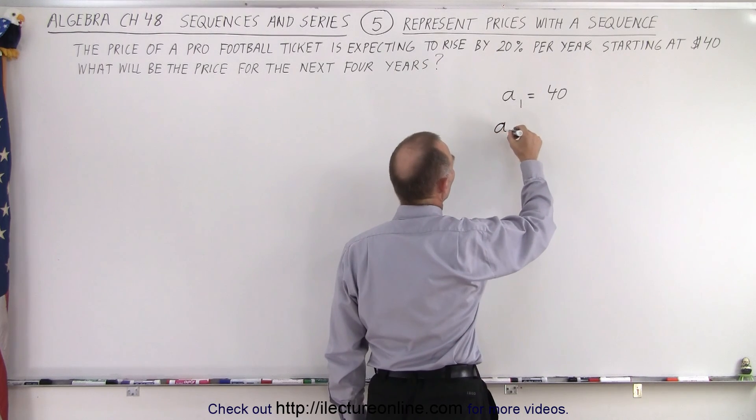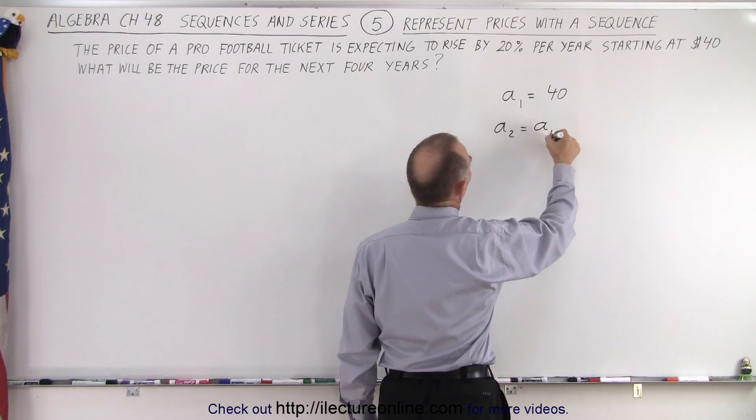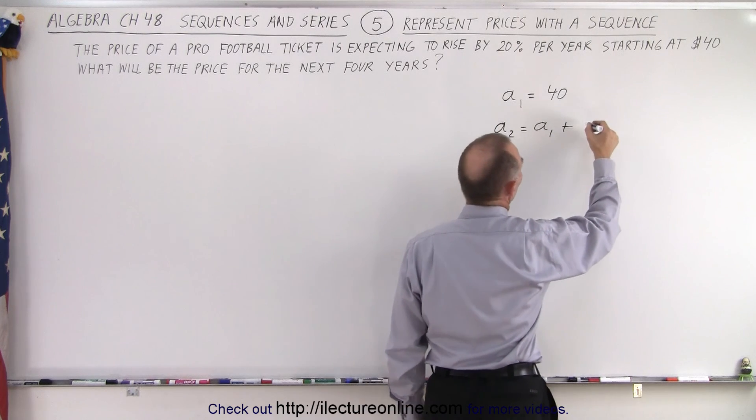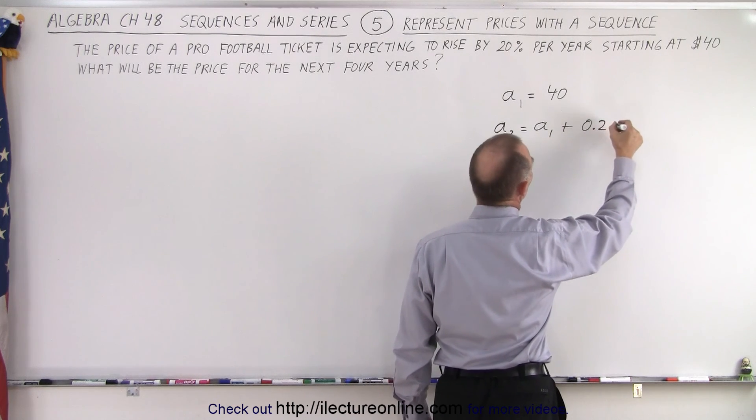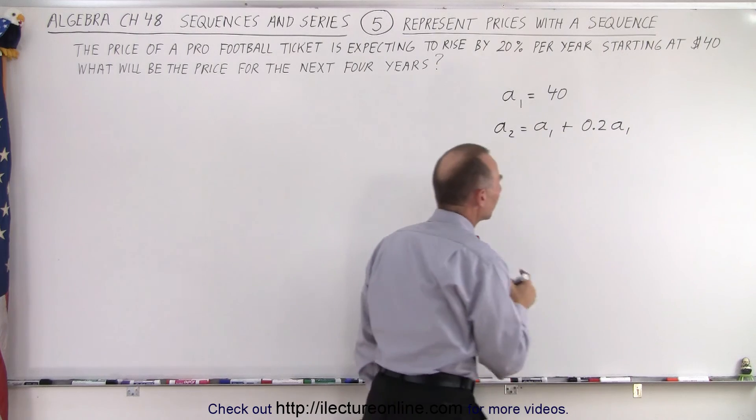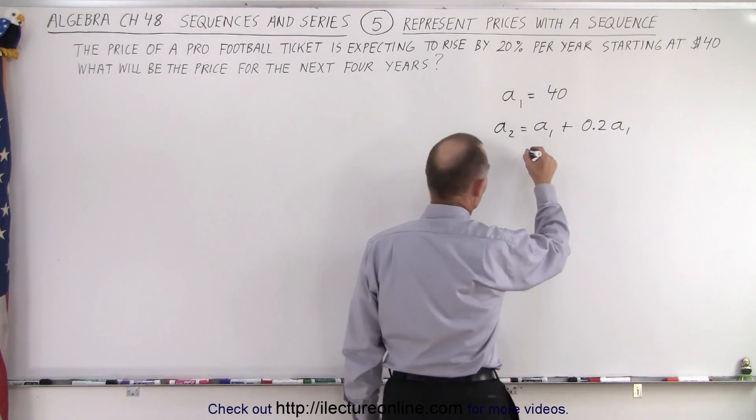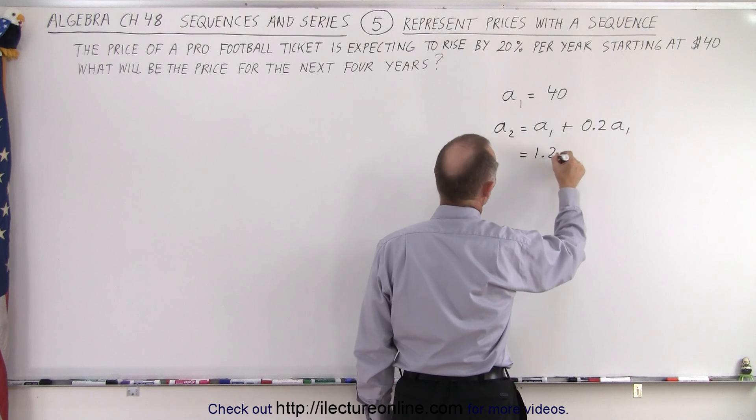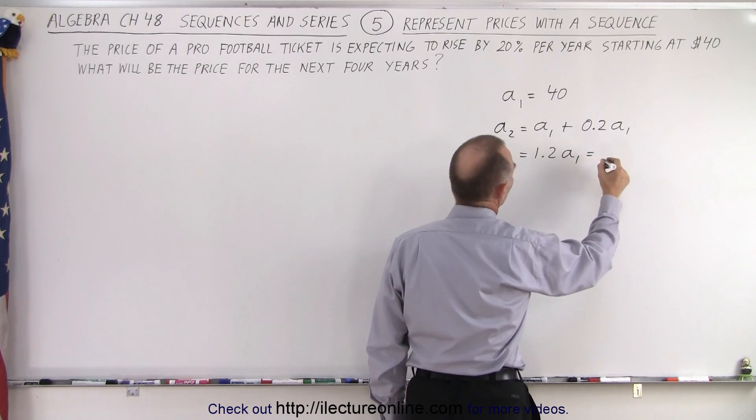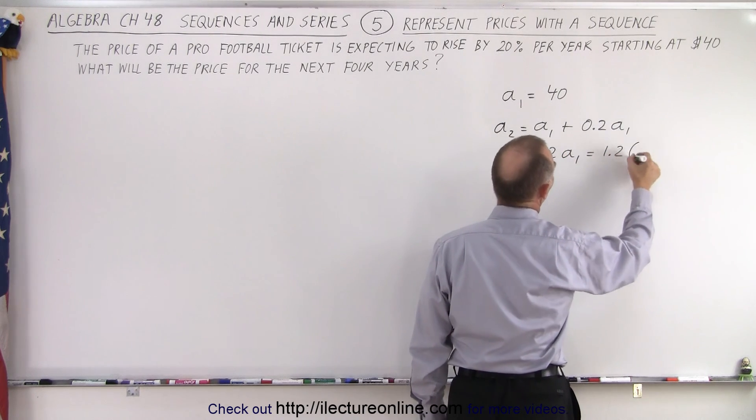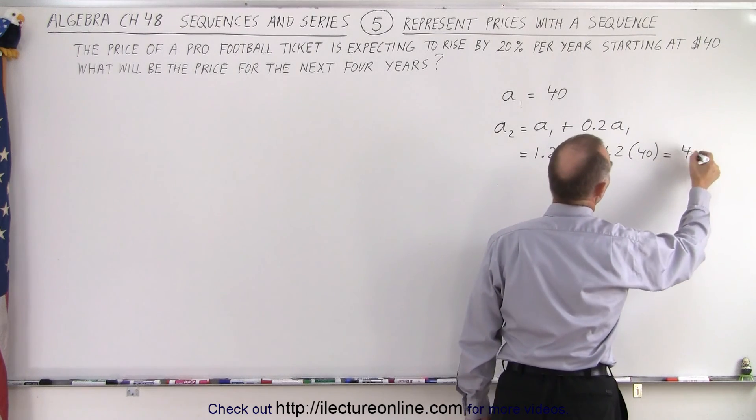Then a₂ will be equal to a₁ plus an additional 20%, 0.2 times a₁. Well, when you take a look at that, that's in essence 1.2 times a₁. So this is equal to 1.2 times a₁, which is 1.2 times 40, and that will be 48.